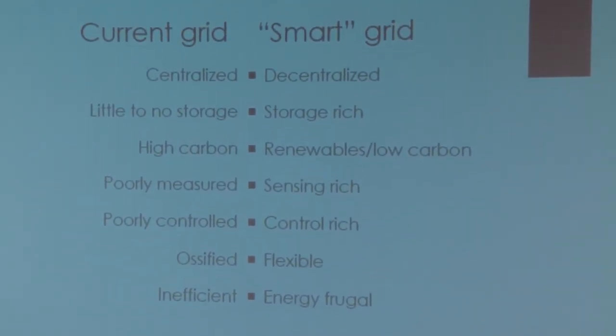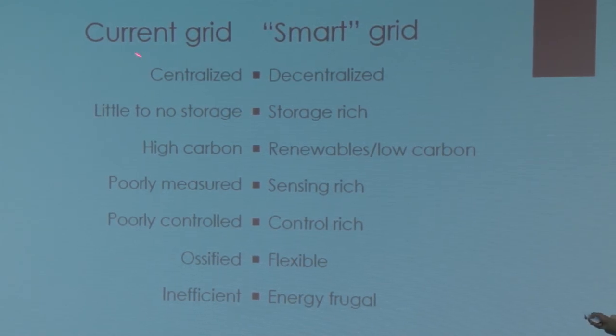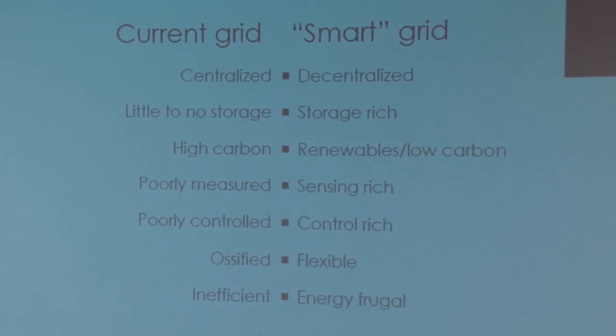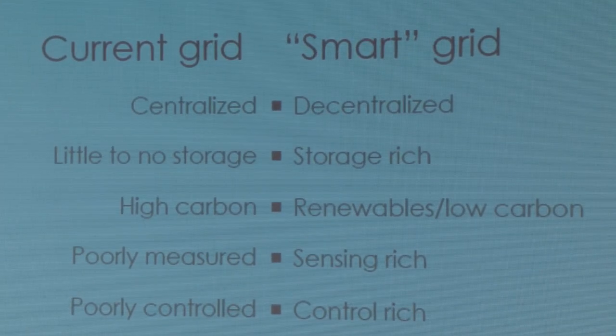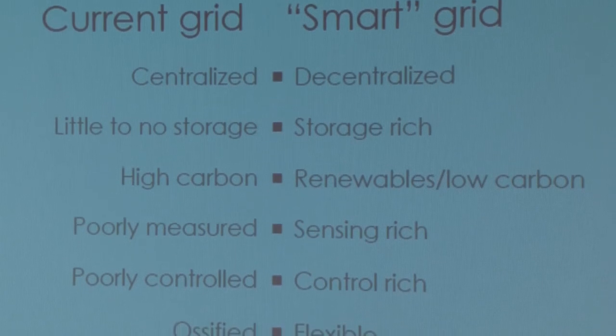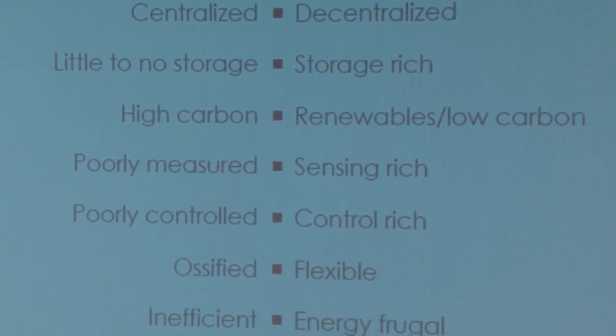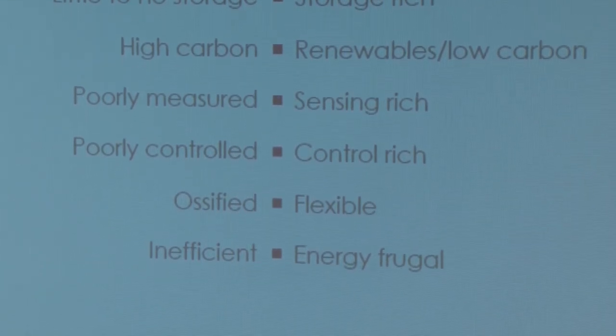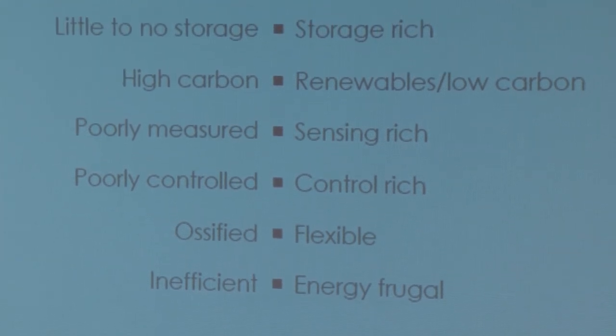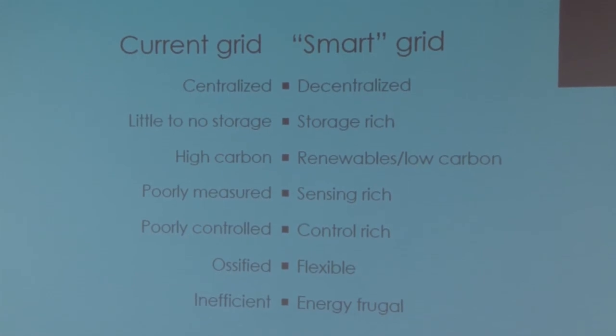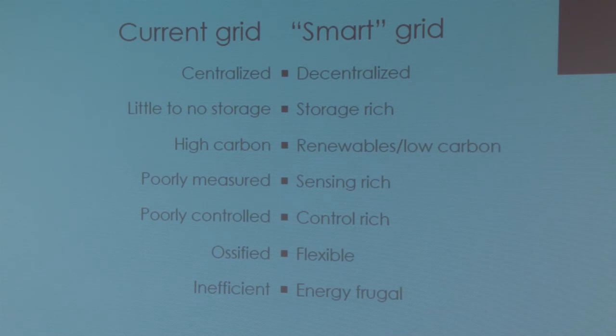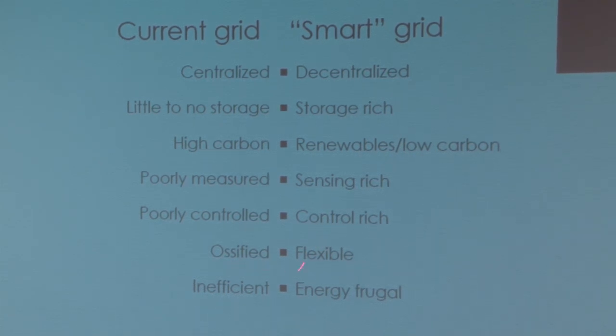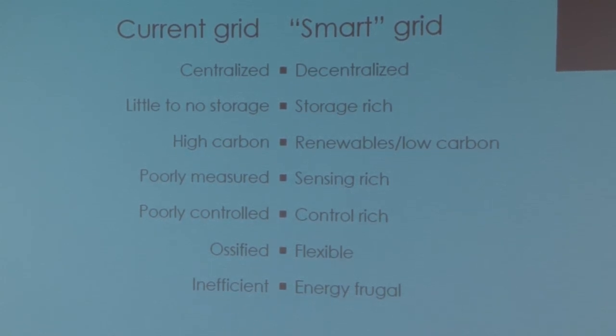On the left-hand side, I have what the current grid is. I talked about those features a bit earlier. It's centralized, but with solar panels and wind farms all over, it becomes decentralized. The current grid has little to no storage, but if all those billions of dollars aren't all being wasted, you're going to have a lot more storage. The current grid is high carbon, but we believe that because solar and wind are very low carbon footprint, we'll have low carbon generation. It's poorly measured. With pervasive sensing, we should get something that's sensing rich. We have very little control right now. We can put on every light bulb, we can put a tiny chip, a sensor on it, and we can send packets to that little chip and say, turn the light bulb on and off. So I can make electrons addressable if I put a wireless controller on them. So every single bulb here could be individually controlled if I wanted to. The old grid is ossified. The new one is supposed to be flexible. The old grid is very inefficient. We hope that the new grid is energy frugal. We don't want to not use energy. We want to be clever about using it.